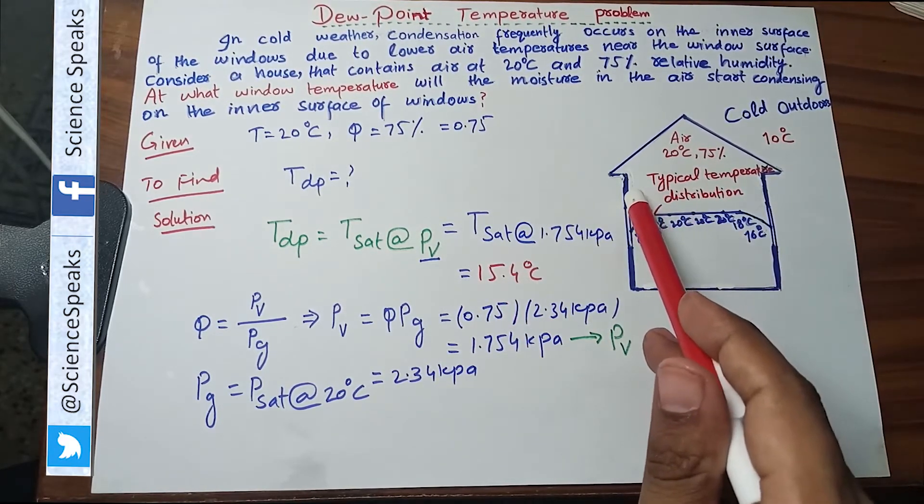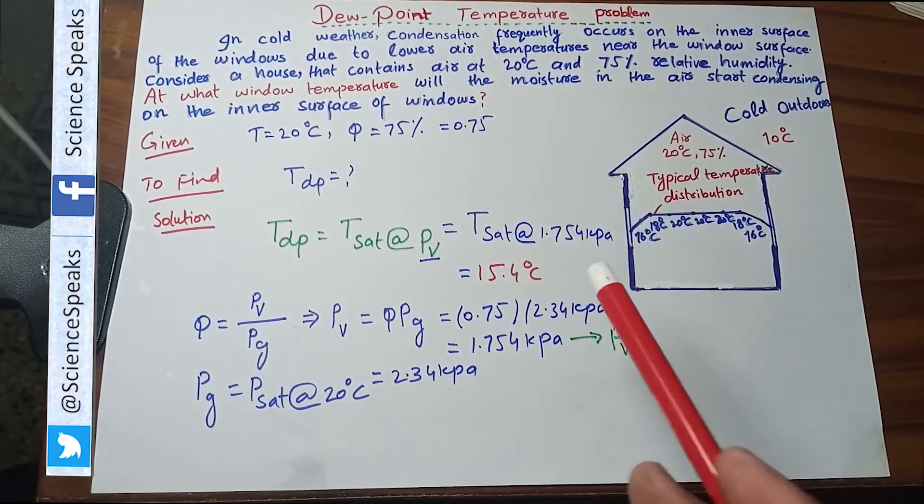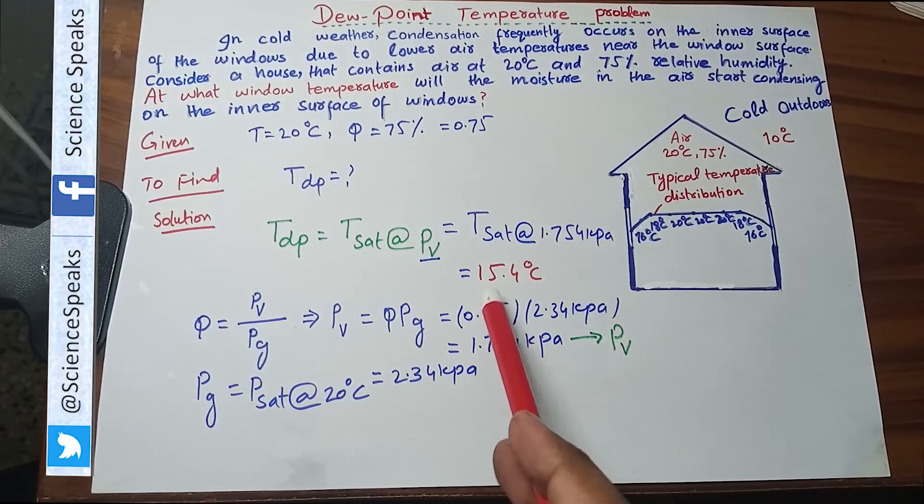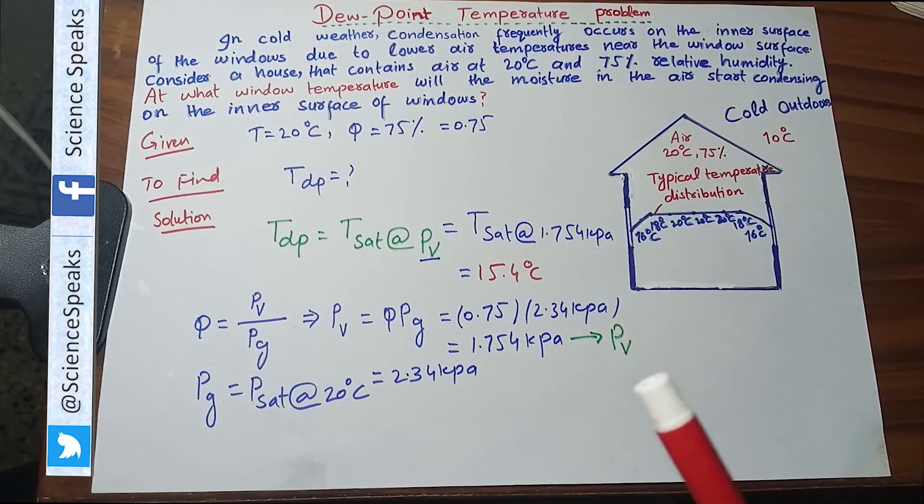If you want to avoid condensation on the inner surface of the window, please try to keep temperature above 15.4 degree centigrade, means above dew point temperature. So that's all for today. Thank you. Goodbye.